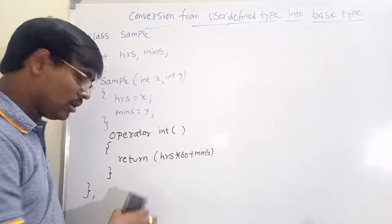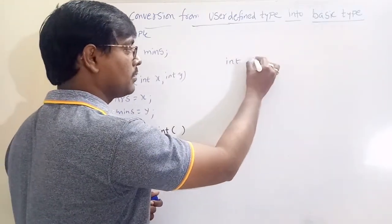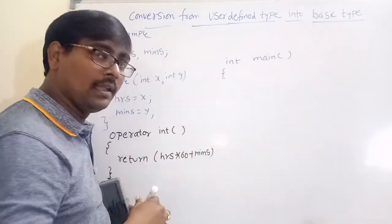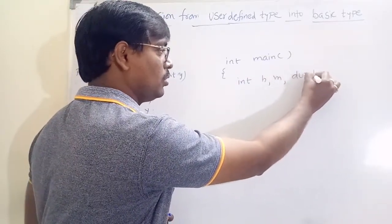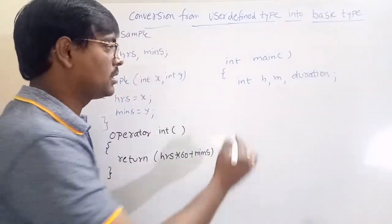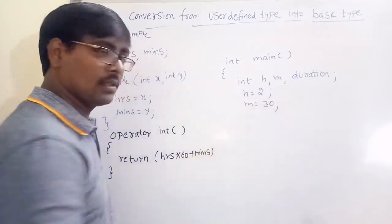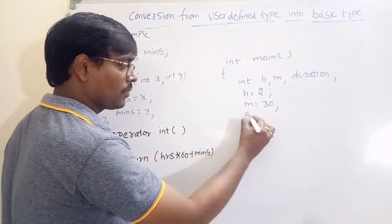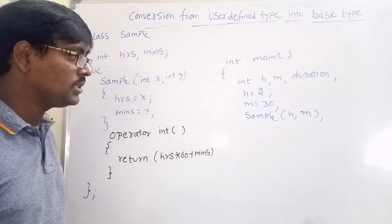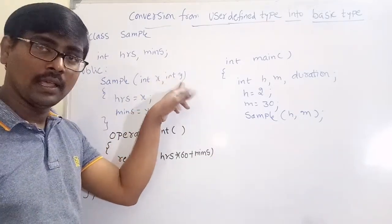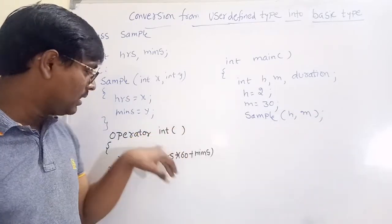In the main function, I am creating three variables: H, M, and duration. H is equal to 2, M is equal to 30. I call the constructor: sample S(H, M), which passes values to X and Y, so hours is assigned 2 and minutes is assigned 30. Up to this point, this is a normal program and the conversion operator is not yet called.